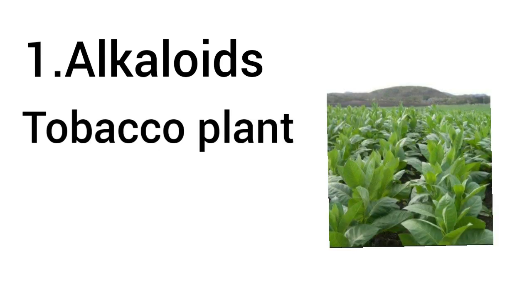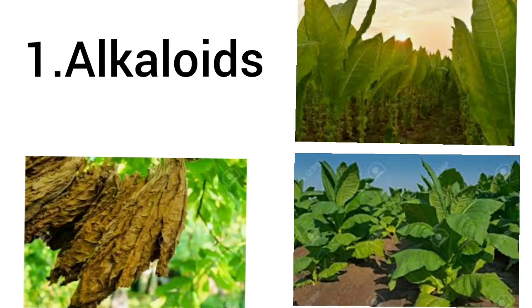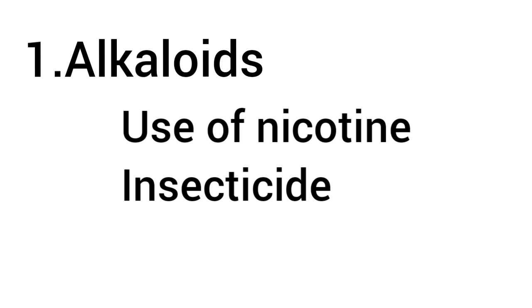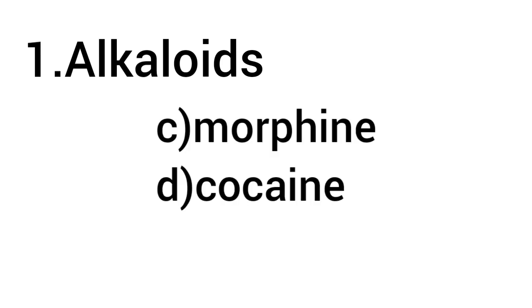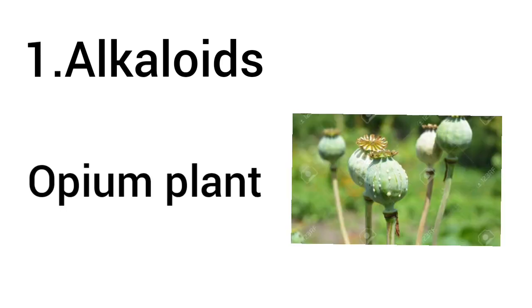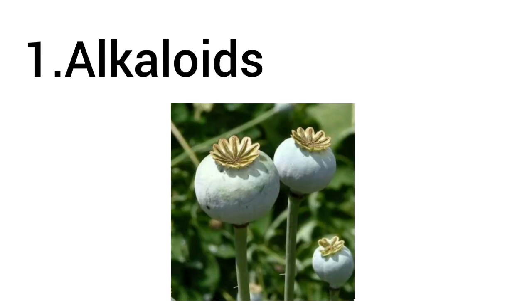Nicotine is an alkaloid found in the tobacco plant, scientifically Nicotiana tabacum. Specifically the leaves of the tobacco plant give out this alkaloid nicotine, and one of its uses is to act as an insecticide — meaning it kills insects. Morphine and cocaine are alkaloids found in the opium plant, botanically Papaver somniferum. The fruit of the opium plant is responsible for secreting morphine and cocaine, and these are used as painkillers.